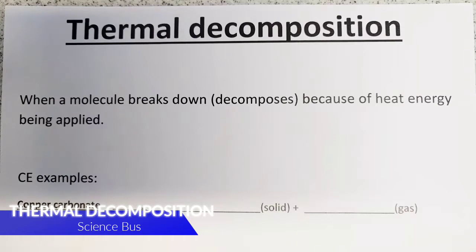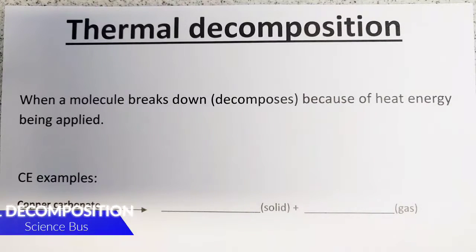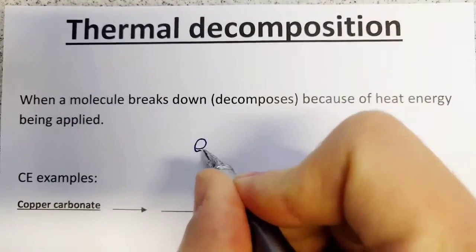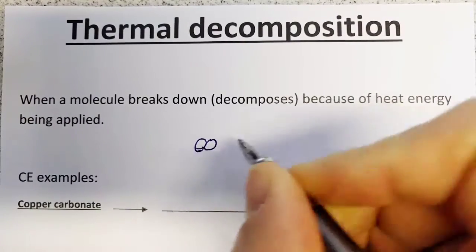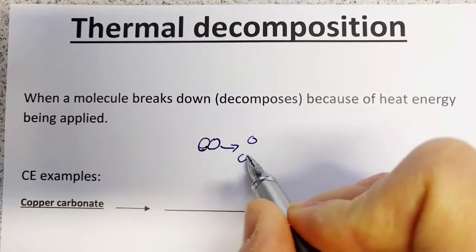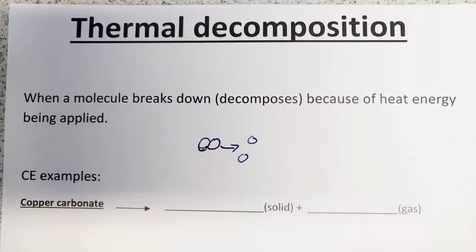Thermal decomposition happens when a molecule breaks down, it decomposes, because of heat energy that's being applied to it. If you imagine the molecule itself, there's a particle with all these different bits, and when you heat it up, one of the particles or parts of the particle breaks off, showing up with two separate bits of particle.